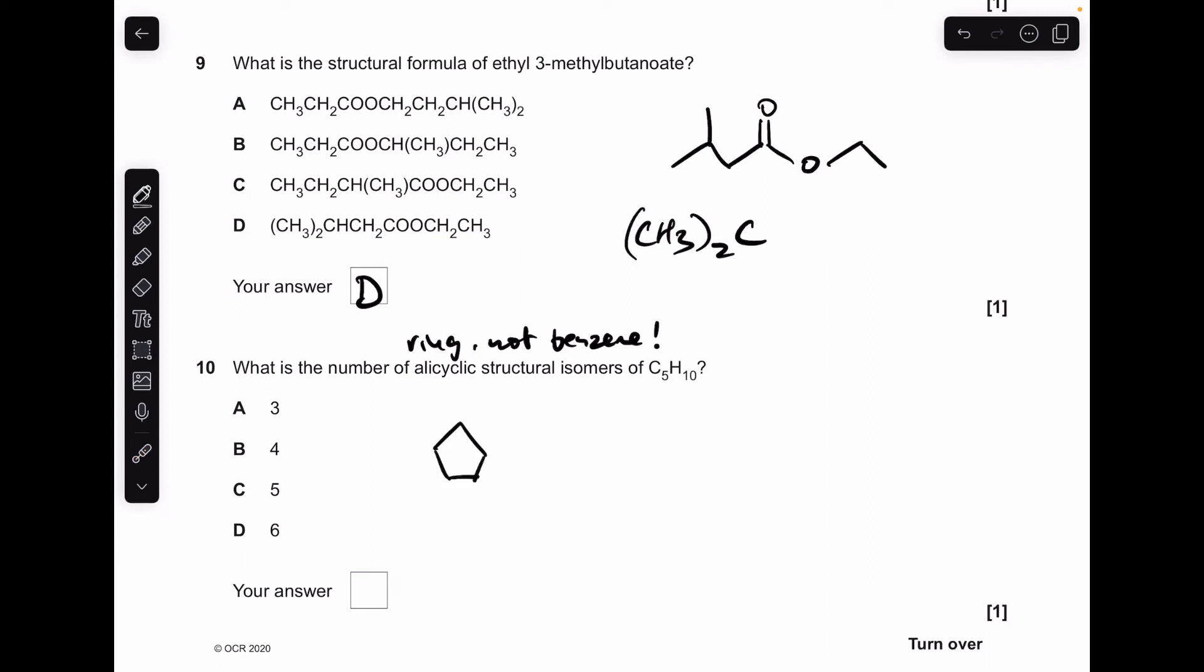So C5H10 could be cyclopentane. It could be methylcyclobutane. And then there's a few with a cyclopropane ring. You could have ethylcyclopropane. 1,1-dimethylcyclopropane. Or 1,2-dimethylcyclopropane. So there's five of them. C is the answer.